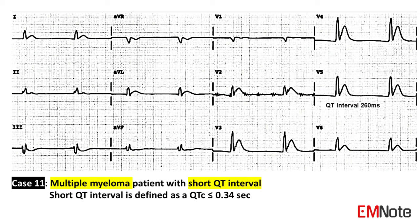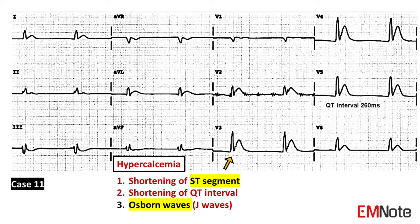Case 11: The patient has multiple myeloma and presents with an ECG with short QT interval. Short QT interval is defined as a QTc less than 0.34 seconds. The ECG is compatible with hypercalcemia. The ECG findings of hypercalcemia include shortening of the ST segment, shortening of the QT interval, and presence of Osborne waves or J waves.